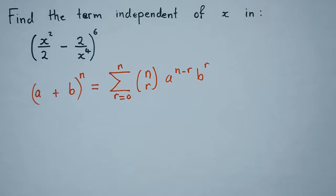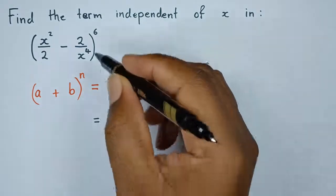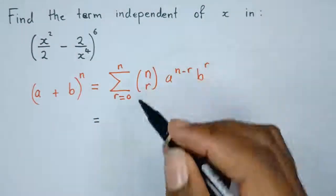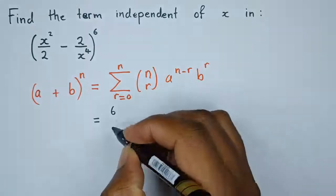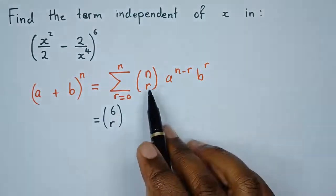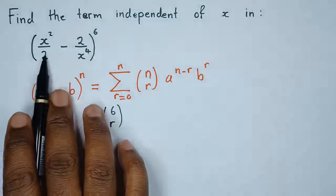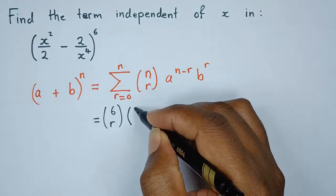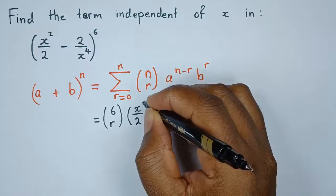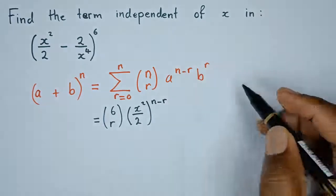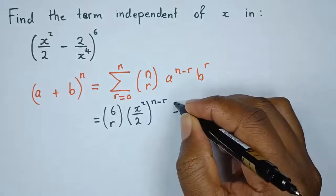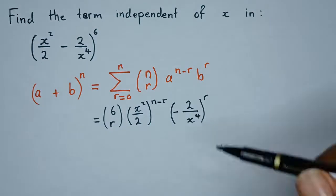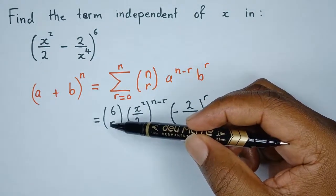We are going to do the substitutions, focusing on this side. Since we're looking for the value of r and we already have n, we can say — combining into one term — we just need C(6, r). Our a is the first term x squared over 2, raised to the power (n minus r). Our b is negative 2 over x to the power 4, raised to the power r.